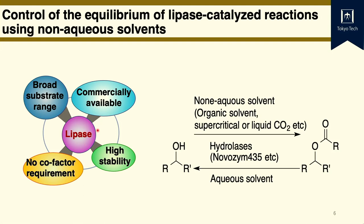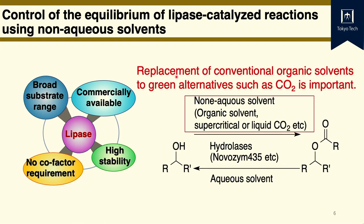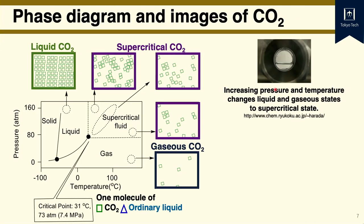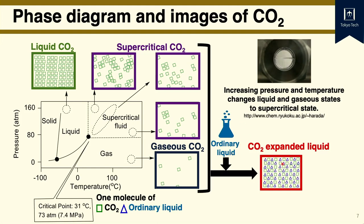Lipase has been used widely due to its merits — it catalyzes hydrolysis and transesterification in organic solvents, so replacement of conventional organic solvents with green alternatives such as carbon dioxide is important. The phase diagram shows carbon dioxide with solid, liquid, and gas phases, and one more phase — the supercritical fluid phase above the critical point of 31°C and 73 atmospheres. If you mix carbon dioxide with ordinary liquid, you get CO2 expanded liquid.